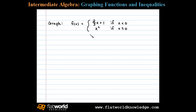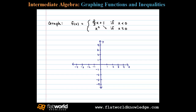Here we're asked to graph a piecewise defined function where the first piece is a linear function and the second piece is the squaring function. Let's begin with a rectangular coordinate plane. The linear function has a y-intercept at (0, 1). From the y-intercept we'll mark off the slope — in this case two-thirds — we'll rise two units and run three. Now two points determine a line and we can craft that function.